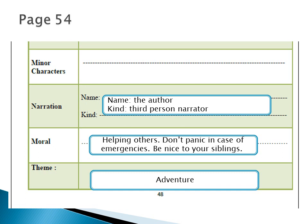For narration: we said the author is the one telling the story from his point of view, so the name of the narrator is the author's name. When the author talks about the characters he uses 'he,' 'they,' 'she,' and 'it,' so it's called the third-person narrator.